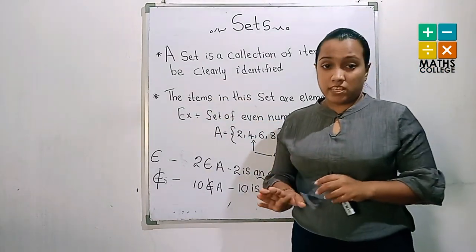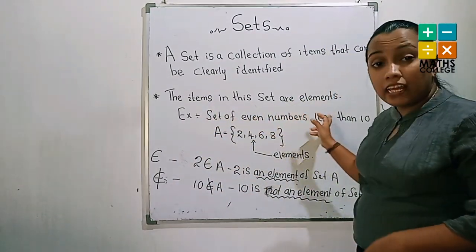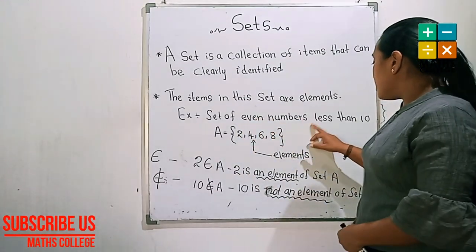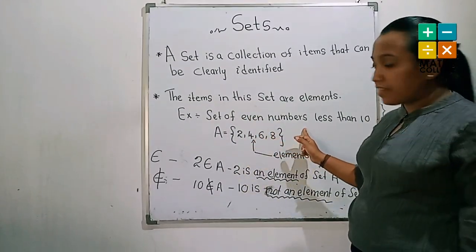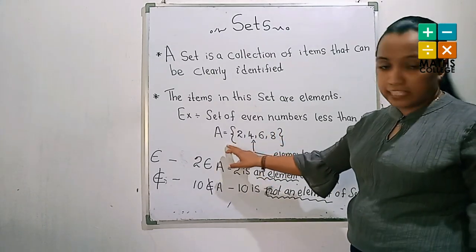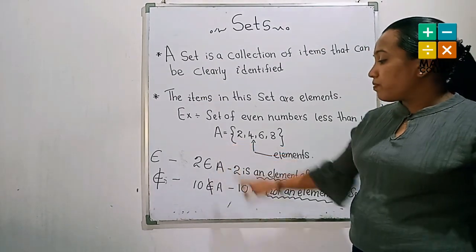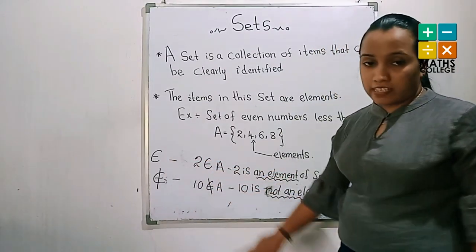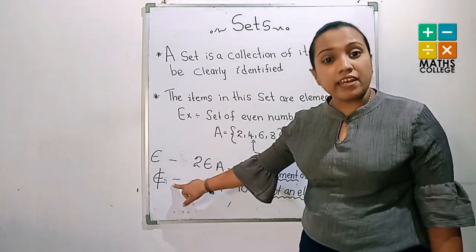Another special thing: what are elements? The items in a set are called elements of the set. Considering the example of the set of even numbers less than 10, the items belonging to this set are 2, 4, 6, 8. These are named elements of set A. Sets are named using English capital letters. Do you remember these two symbols? They represent 'is an element of' and 'is not an element of' a set.